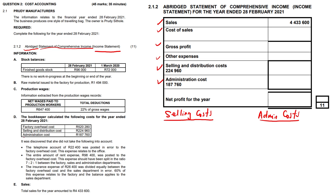We have total sales for the year amounting to 4,433,600. Unfortunately we don't get a mark for that because it's printed on the answer page. Now we're looking at how to locate the other figures - cost of sales. There doesn't appear to be too much by way of cost of sales here, other than we have an opening stock of finished goods and a closing stock of finished goods. Opening stock of finished goods: 72,000, plus production which we'll get to shortly, minus the closing stock of 96,000.